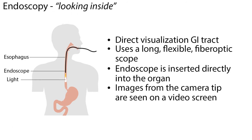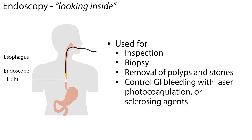Endoscopy procedures allow for direct visualization of portions of the GI tract by using a long, flexible, fiber optic scope. Endoscopy means looking inside, in which an endoscope is inserted directly into the organ, and images from the camera tip are seen on a video screen. It may be used for inspection, biopsy, removal of polyps and stones, and to control GI bleeding with laser, photocoagulation, or sclerosing agents. Most endoscopic procedures are performed on an outpatient basis.